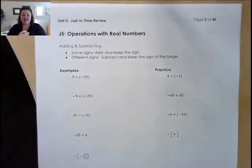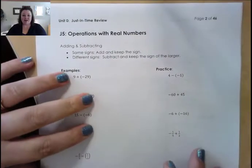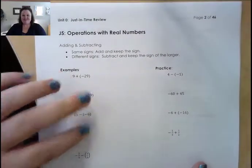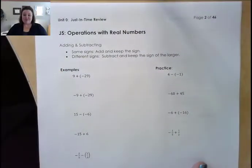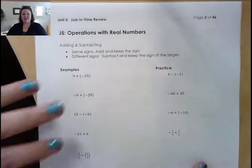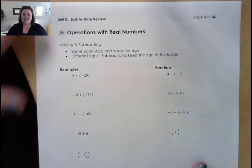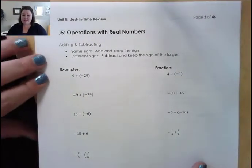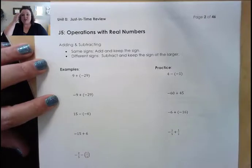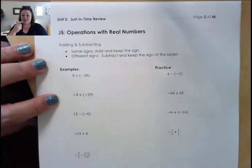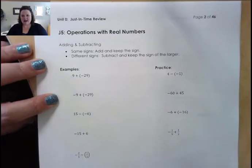We're going to go over section J5 in our unit zero, which is all of our review sections. J5 is all about operations on real numbers, which is something that most often we're probably just going to do in our calculator. But it is good to review just so that we are able to do some things quickly off the top of our head.